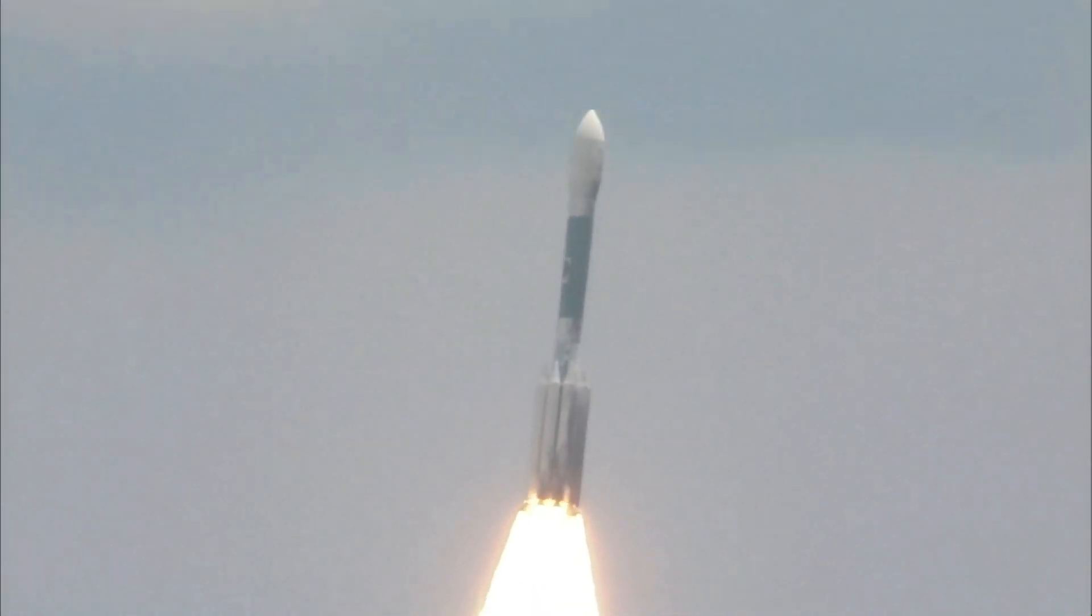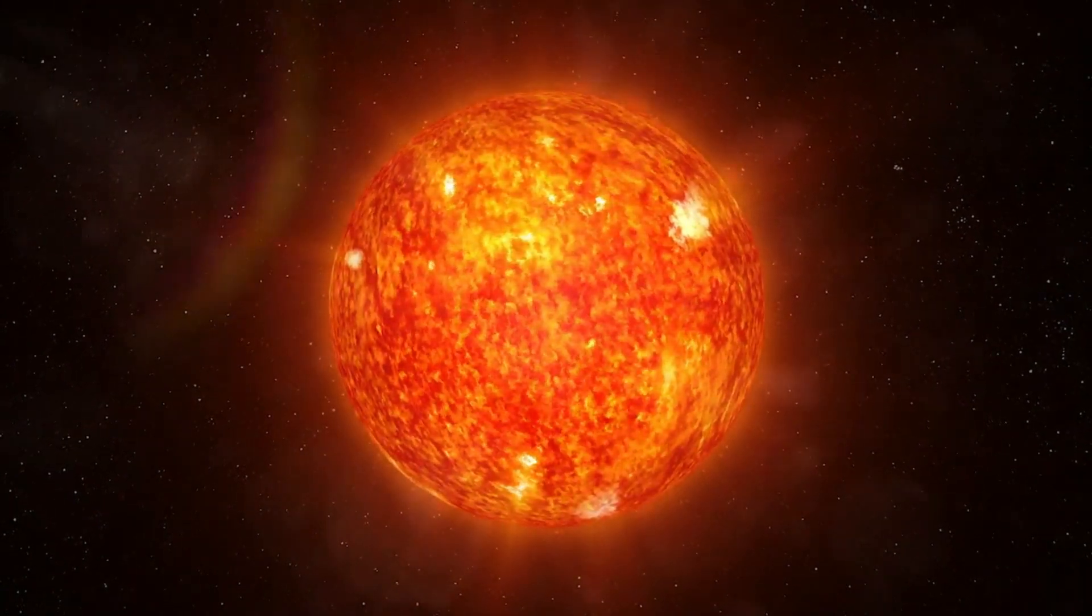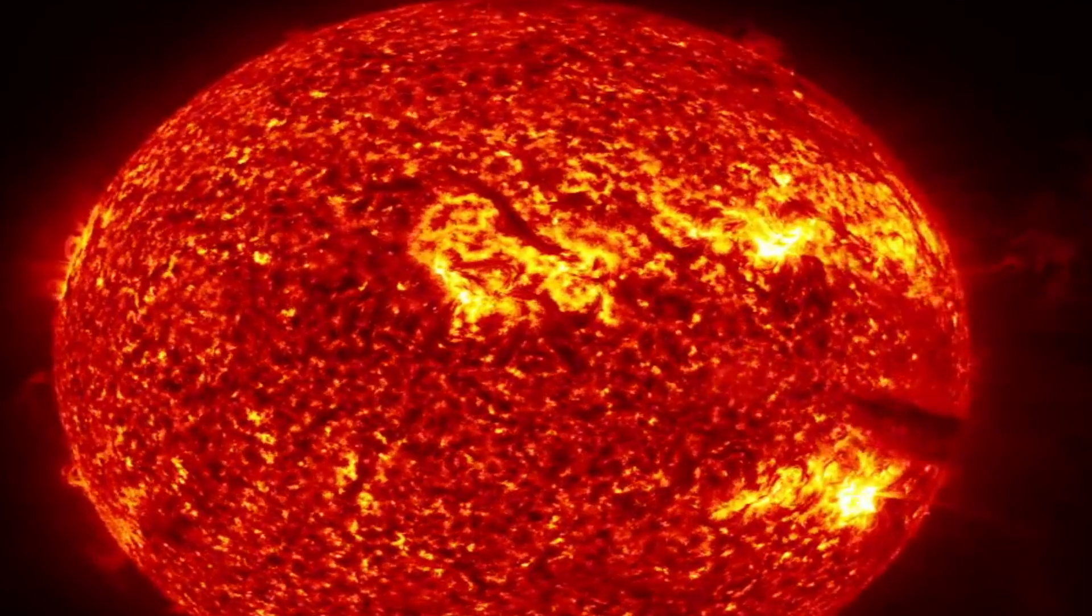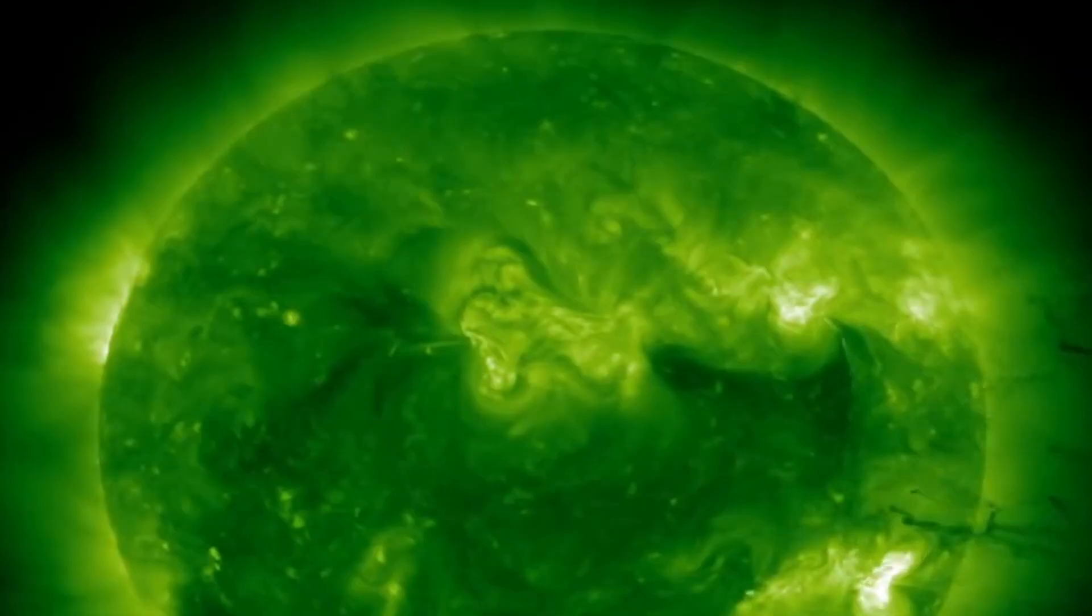ISRO will send seven instruments in the Aditya L1 mission, which will aid in studying the atmosphere and outer layers of the Sun. Using a visible emission line coronagraph, this instrument functions by blocking the intense sunlight emitted by the Sun.